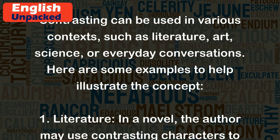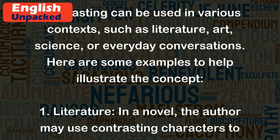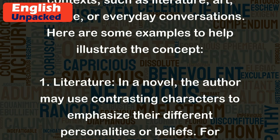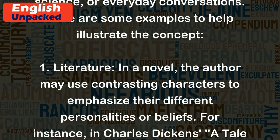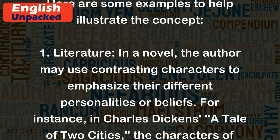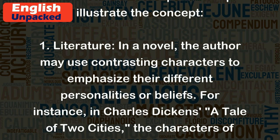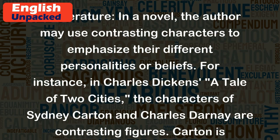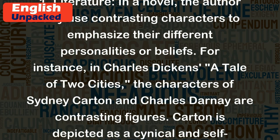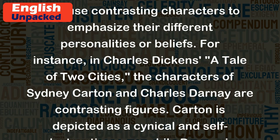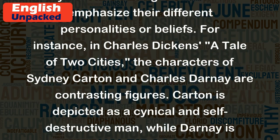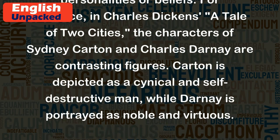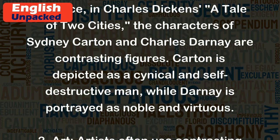Literature: In a novel, the author may use contrasting characters to emphasize their different personalities or beliefs. For instance, in Charles Dickens' A Tale of Two Cities, the characters of Sidney Carton and Charles Darnay are contrasting figures. Carton is depicted as a cynical and self-destructive man, while Darnay is portrayed as noble and virtuous.